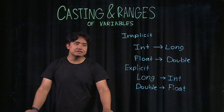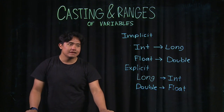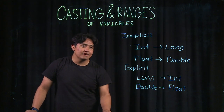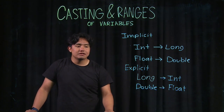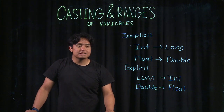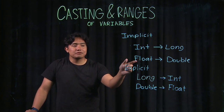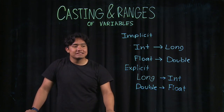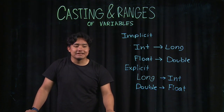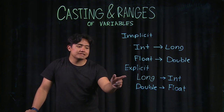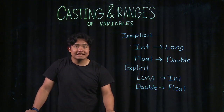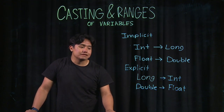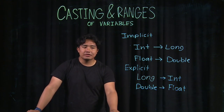Here are some examples of implicit and explicit casting. For implicit casting, the ones Java does automatically, examples are int to long or float to double. It does this automatically because it's an increase in bits, so you won't lose any precision. For explicit casting, examples like double to int or double to float carry a chance of losing some precision. Now let's see this in action in the code editor.